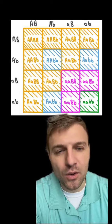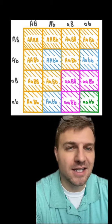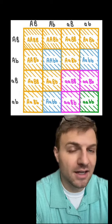We can see here in the bottom right corner that there is a one in 16th chance of having little a, little a, little b, little b.